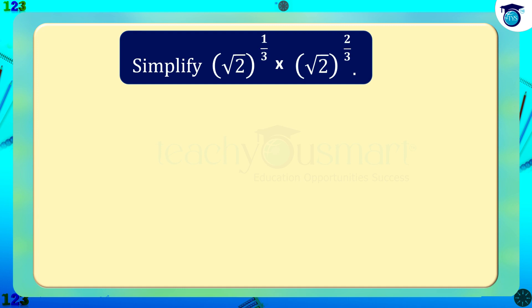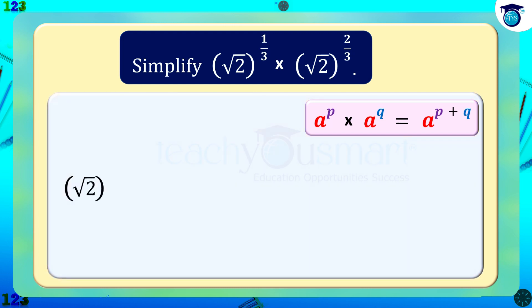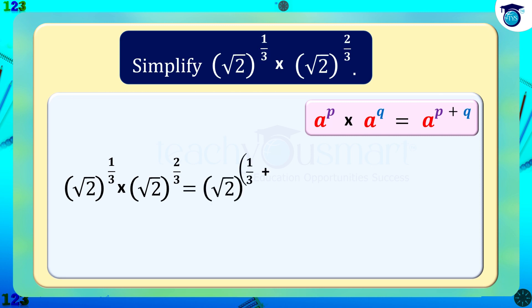This is in the form a raised to p multiplied by a raised to q equals a raised to p plus q. So, root 2 whole raised to 1 by 3 multiplied by root 2 whole raised to 2 by 3 equals root 2 whole raised to 1 by 3 plus 2 by 3, which equals root 2 whole raised to 1, equals root 2.